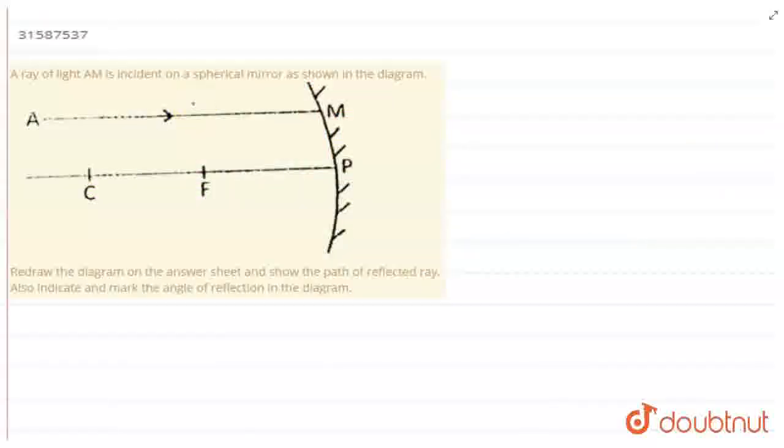What do we call the ray of light AM? It is incident on a spherical mirror as shown. Ray of light AM is incident on the spherical mirror as shown. Redraw the diagram on the answer sheet and show the path of reflected ray. Also indicate and mark the angle of reflection.